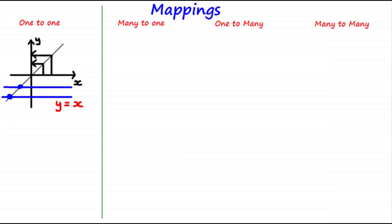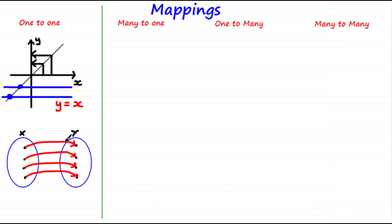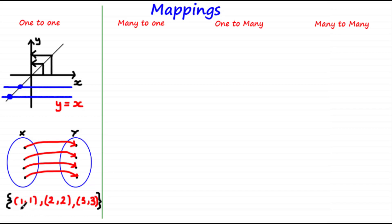Another way to show a mapping is by using a mappings diagram, which is just another visual way of showing the relationship between elements of two different sets. Here we have set x and set y, and this diagram shows that each element in set x maps directly onto only one element in set y — hence why we call this a one-to-one mapping. We can also represent a mapping using a set of ordered pairs, where the first coordinate is the input and the second is the output. For example, inputting x equals 1 gives output 1, and inputting x equals 2 gives output y equals 2 and nothing else. So this set of ordered pairs illustrates a one-to-one mapping.